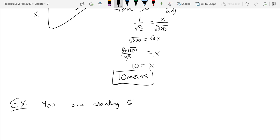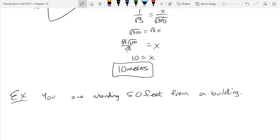You're standing 50 feet from a building. We have to say how high above the ground your eyes are. We'll just make it easy and say your eyes are five feet above the ground.